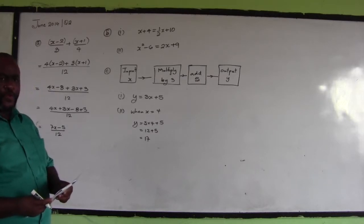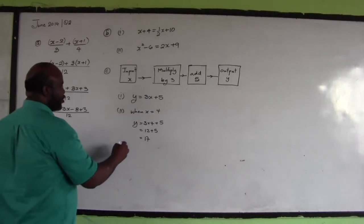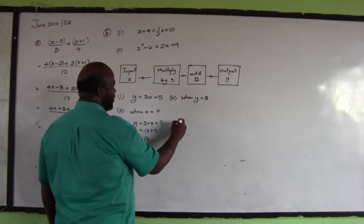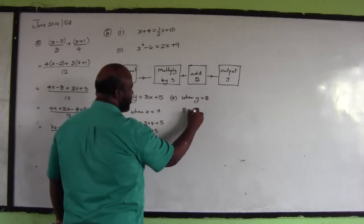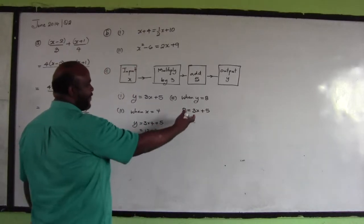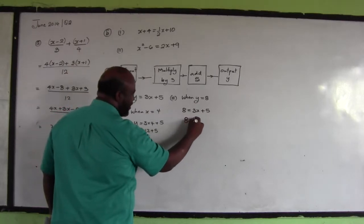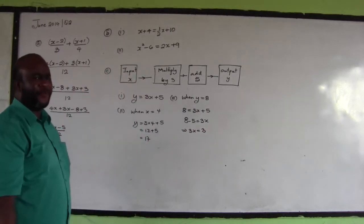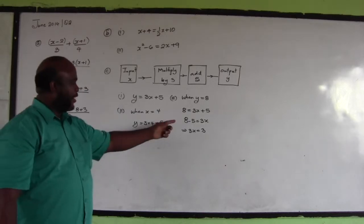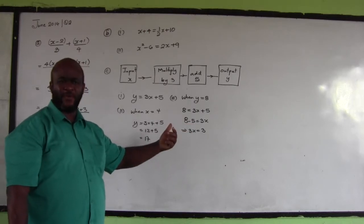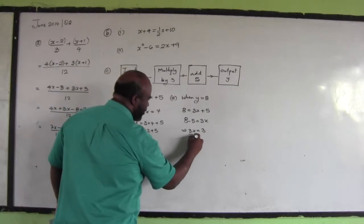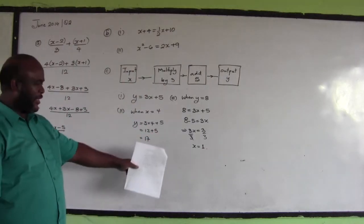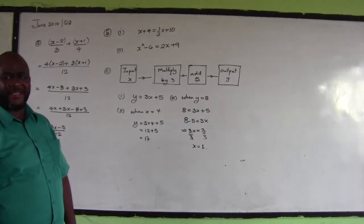Part C(iii): if the number 8 was the output, what would be the input? Output is y, so when y is equal to 8, we have 8 equals 3x plus 5. Positive 5 comes over and becomes negative: 8 minus 5 equals 3x, so 3x equals 3. Divide both sides by 3: x equals 1. If the output is 8, the input would have been 1.